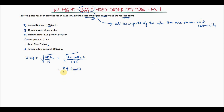So 89.4 units is the economic order quantity. By considering the trade-offs between ordering costs and holding costs, this is the optimal quantity that should be ordered. Next, we have to find the reorder point.